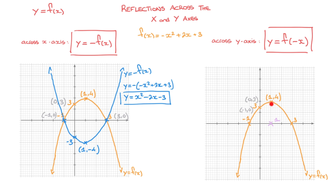Moving on to the vertex with coordinates 1, 4 — following this transformation, this point will turn into the point whose x-coordinate is the opposite of 1, which would be negative 1. Since the y-coordinate is unaffected, that would be the point right here with coordinates negative 1, 4. Carrying on to the second x-intercept with coordinates 3, 0 — following this transformation, this point will turn into the point whose x-coordinate is the opposite of 3, which is negative 3, right there.